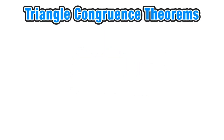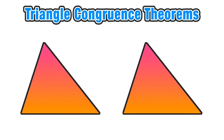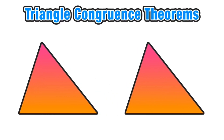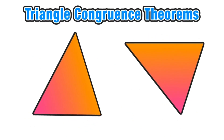We want to extend this kind of thinking to comparing triangles to see whether or not they are congruent. If their corresponding sides and angles have the same measure, then we can say that the triangles are congruent. This applies even when the figures don't have the same orientation, and visually it's not always easy to tell whether or not the triangles are congruent.